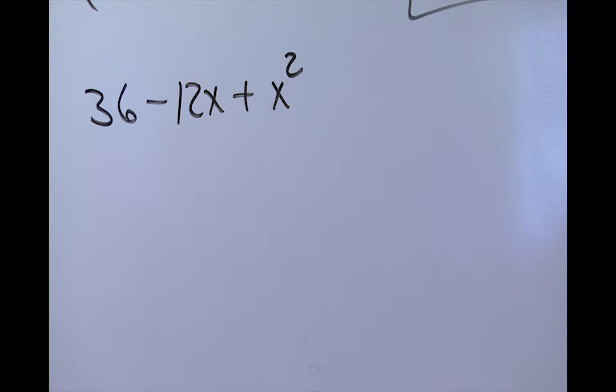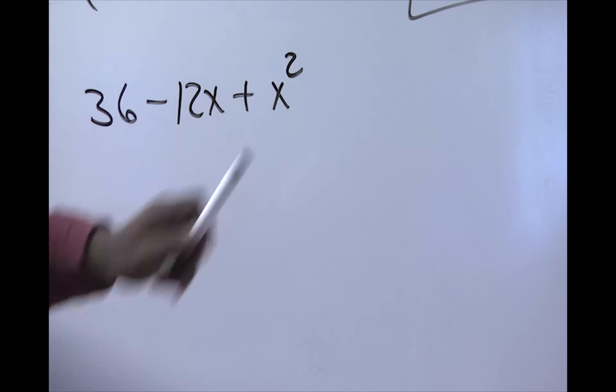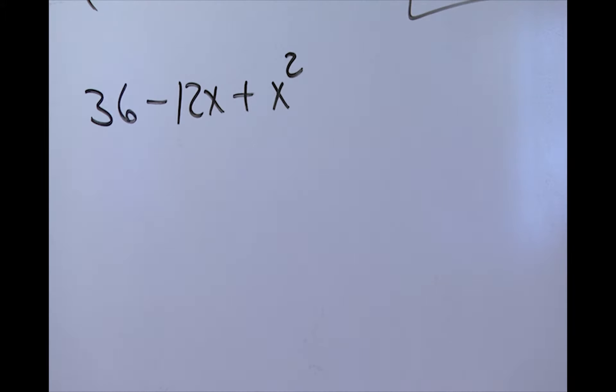You might notice that this is in the ascending order. That means that your exponents go up. We have zero, we have one, and we have two. If you want to make it easier for you, we can rotate this.